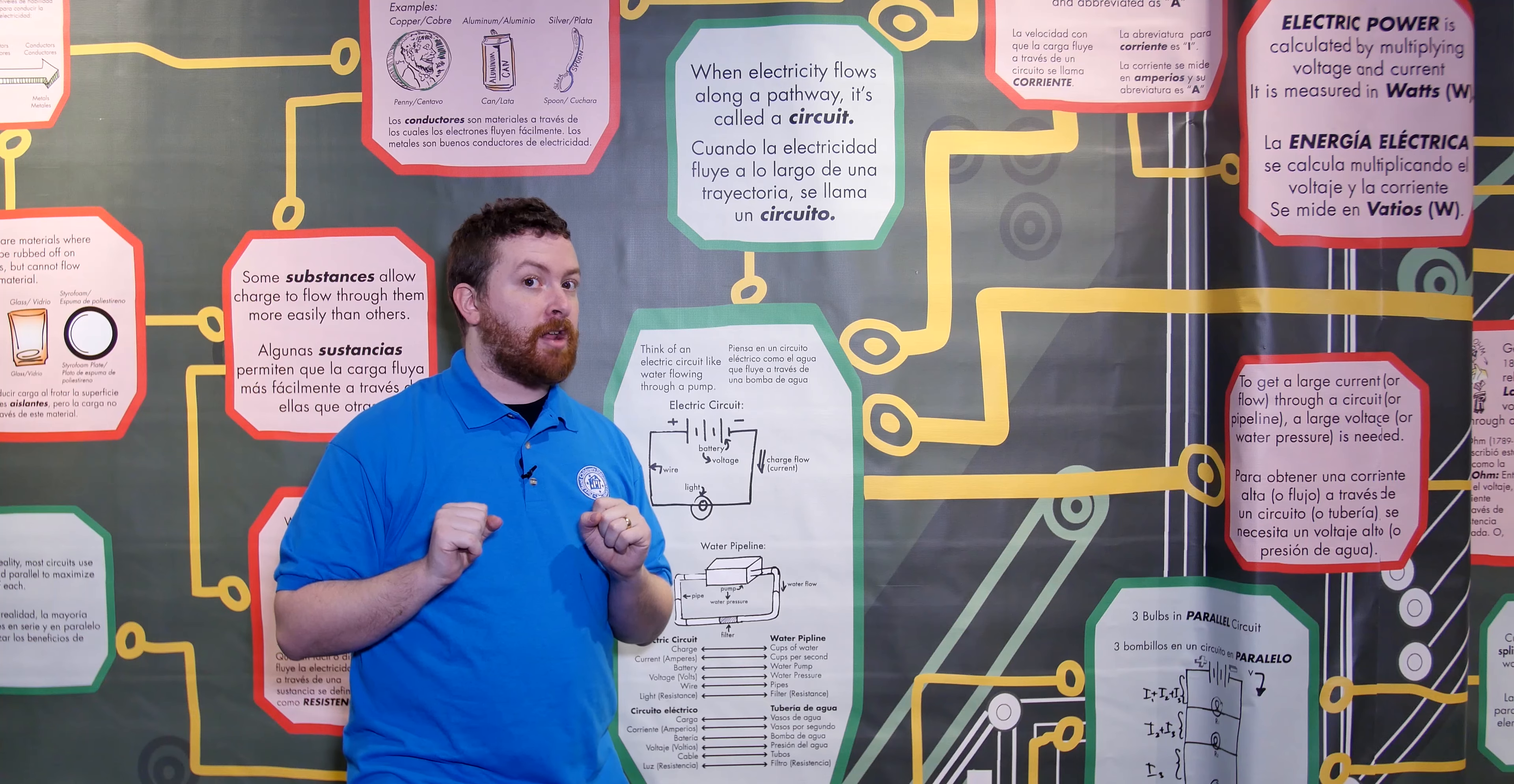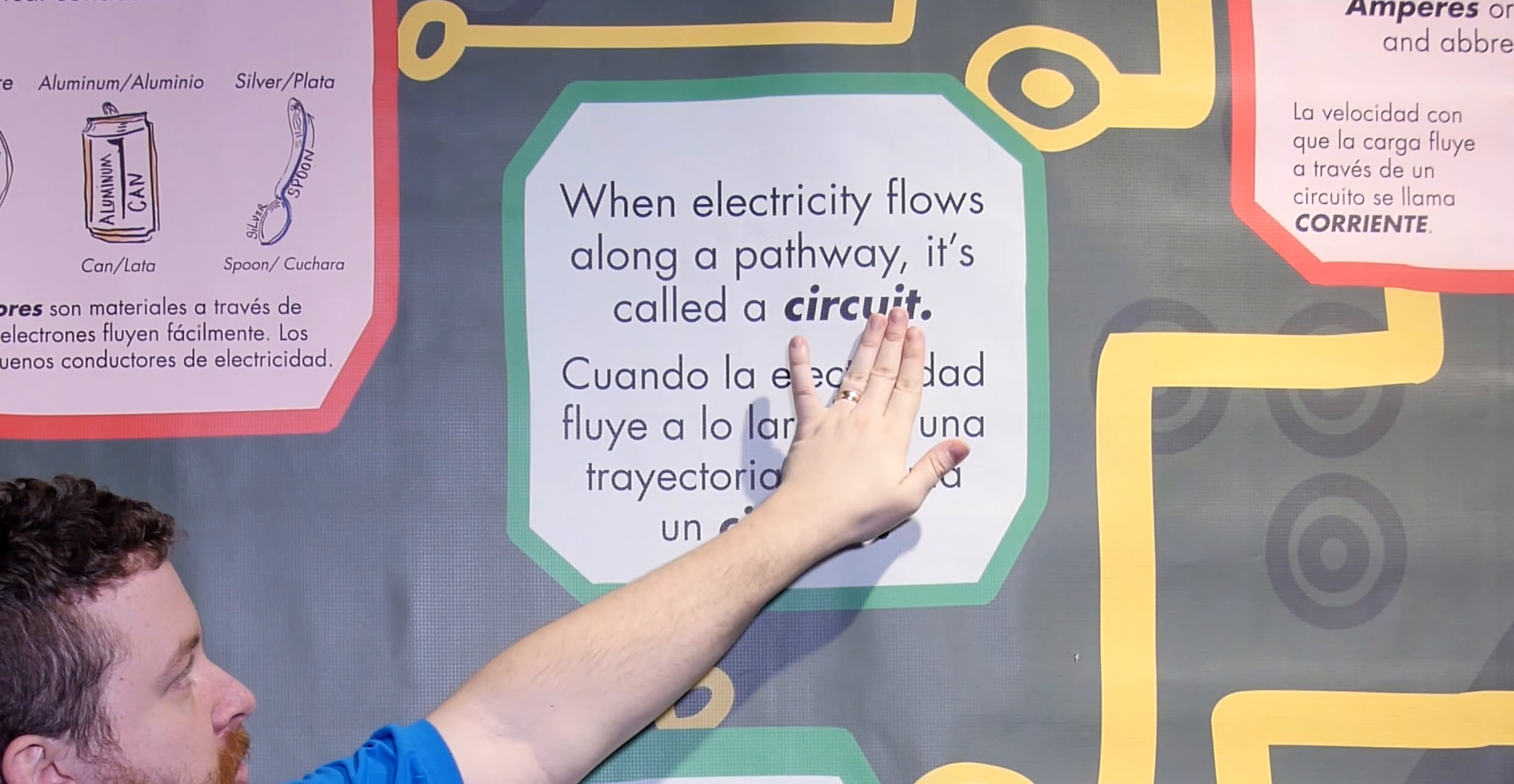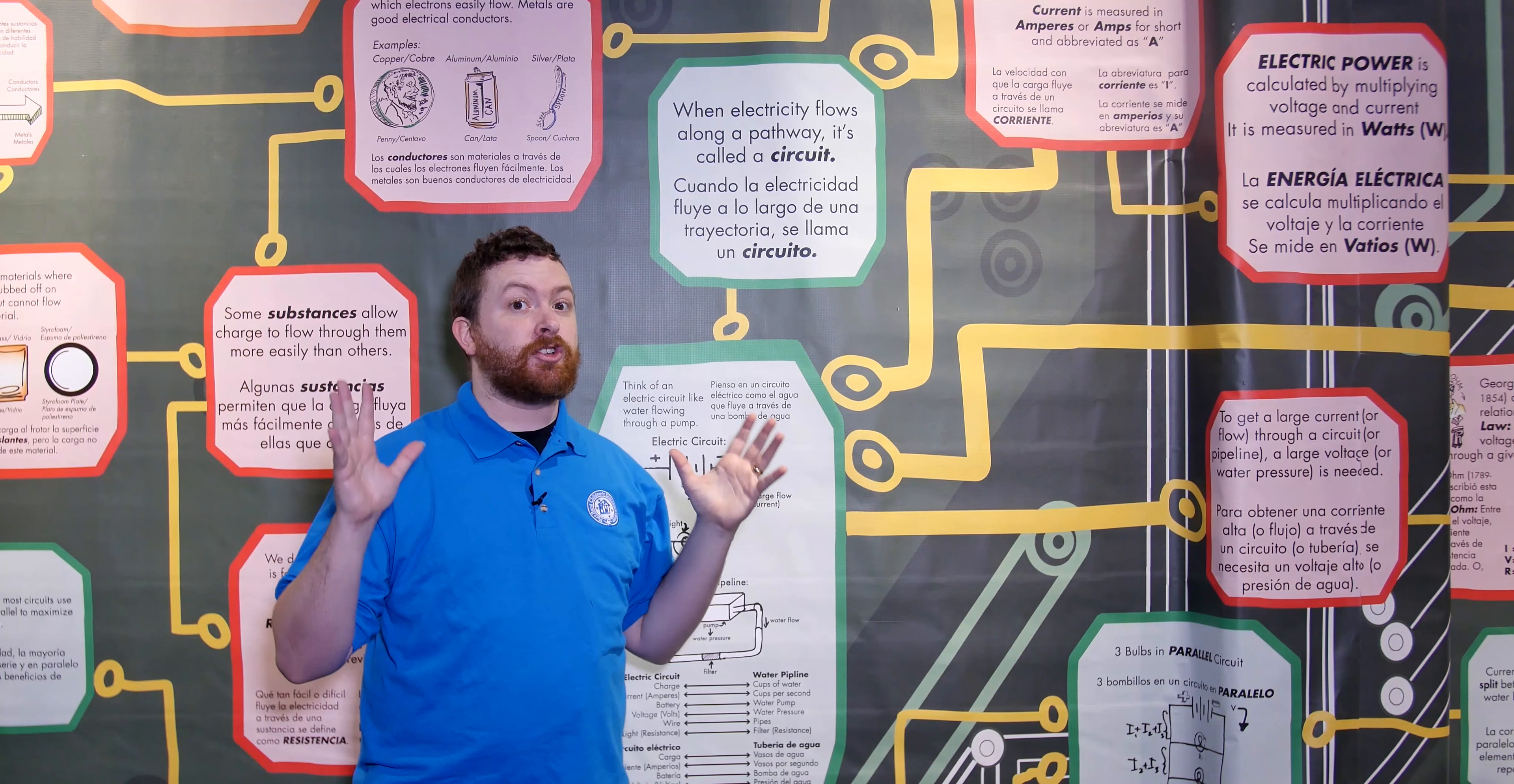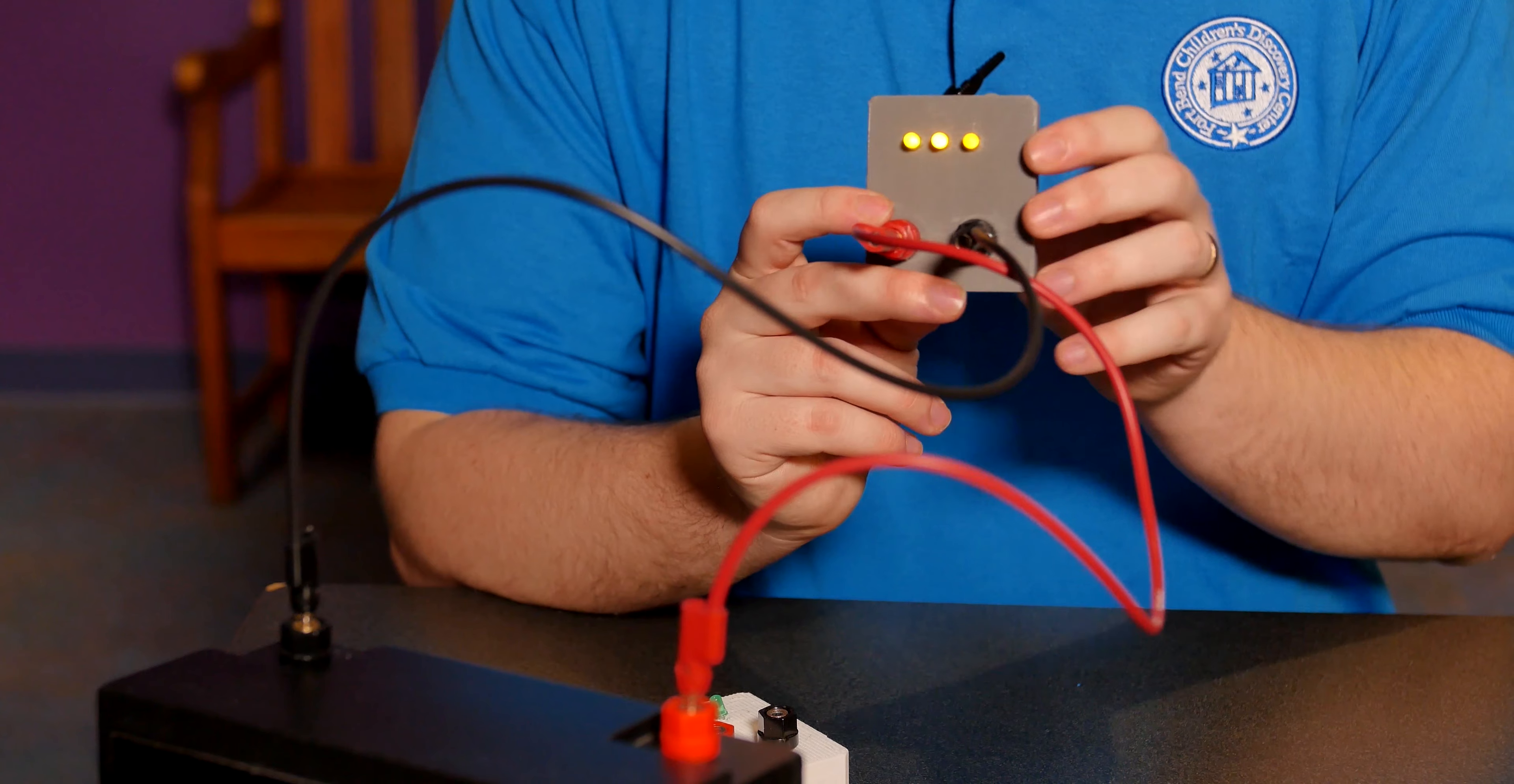So first I want to talk about the word circuit. You can see right up here, circuit - if you look at just those first four letters, looks like the word circle doesn't it? That's because they actually have the same root and there's a very good reason for that. Circuits are circles.